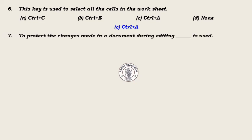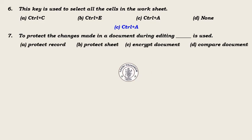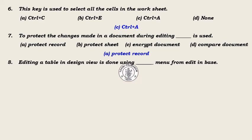Question 7: To protect the changes made in a document during editing, dash is used — Answer: Protect Record. Question 8 and beyond: continued from the model paper — edit menu from base.